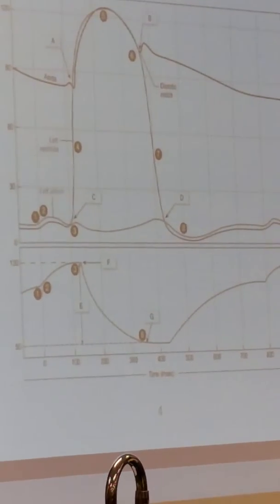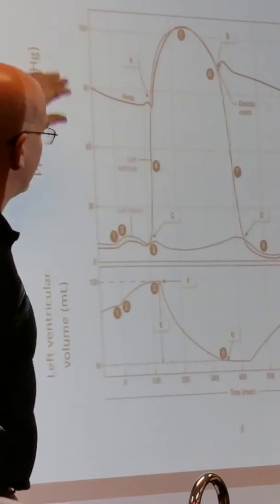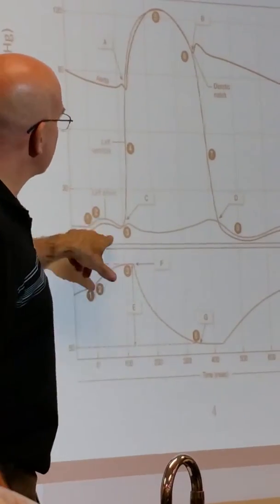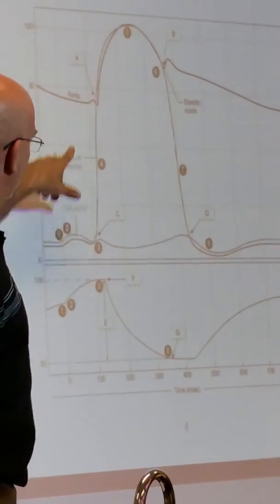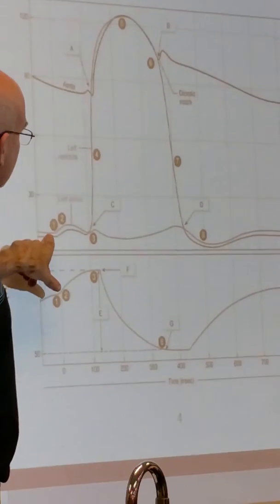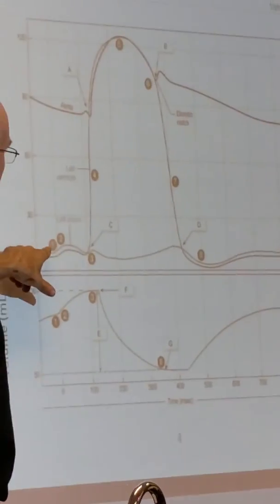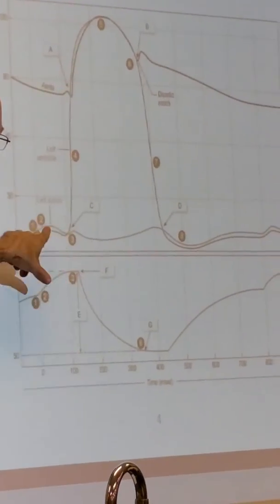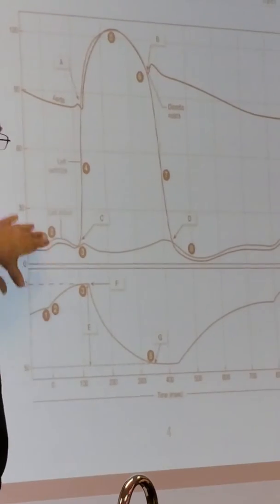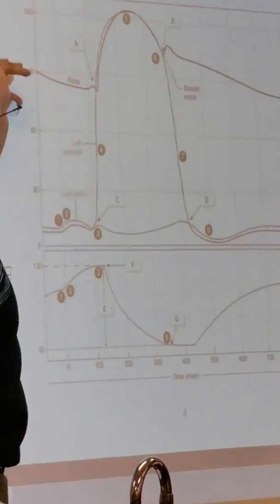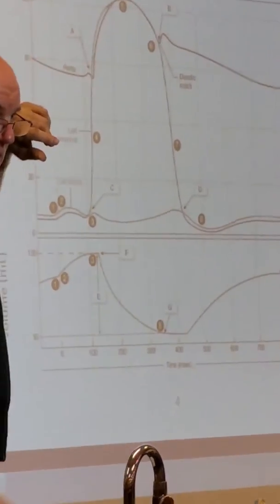This graph tells you a lot. Up here, this is pressure, and these lines—one is the aorta, this is the left atrium, this is the left ventricle. Look at your lines, they're labeled for you: left ventricle, left atrium, aorta. This is pressure; look how the pressure goes up.